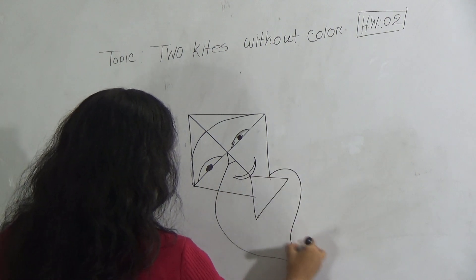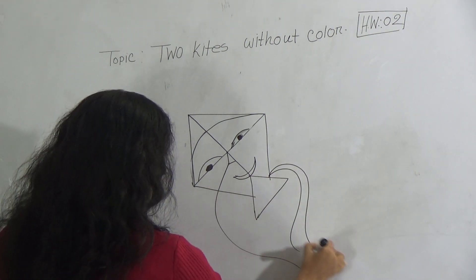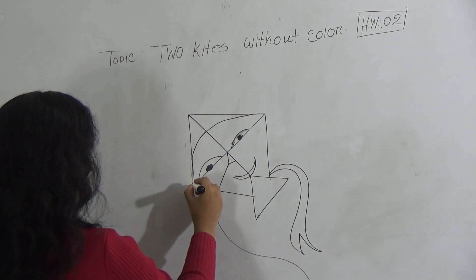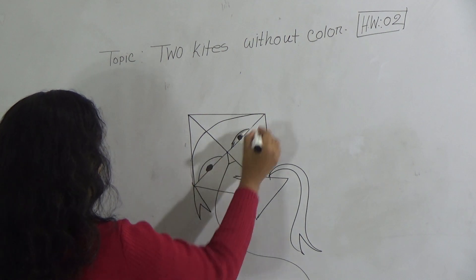And for the decoration, you can give here another line and join like this. So our one kite is complete. Now we will decorate this.